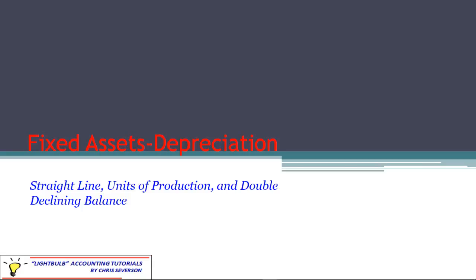Now let's go ahead and talk about fixed assets and the depreciation side of things. We're going to talk about three different methods throughout this section, including the straight line method, units of production, and double declining balance.